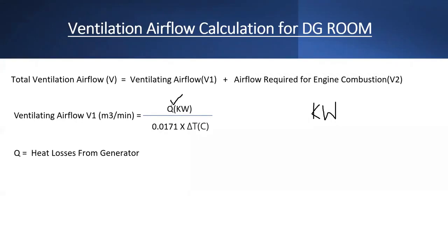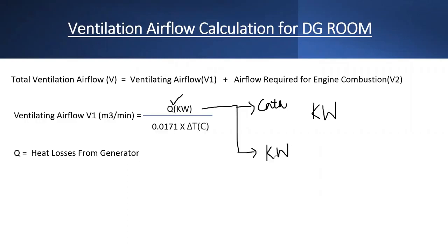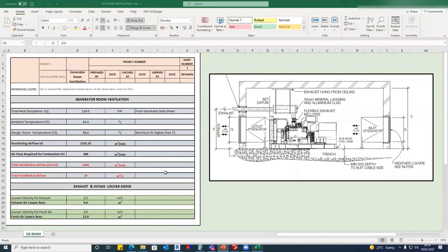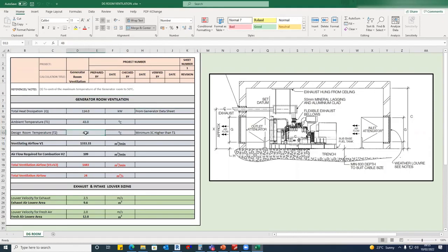There are two ways to get the heat dissipation value. The first case is when we have the generator catalog — we can get all the values from it. The heat dissipation value comes from the generator datasheet. The outside temperature and the design temperature are also inputs — minimum 5 degrees above ambient, and the room temperature should not exceed 50 degrees Celsius.